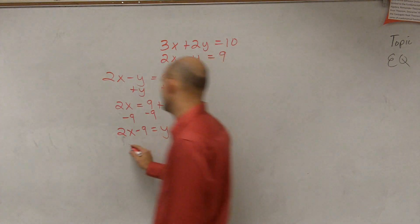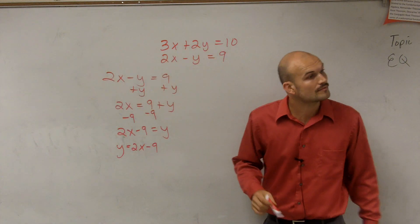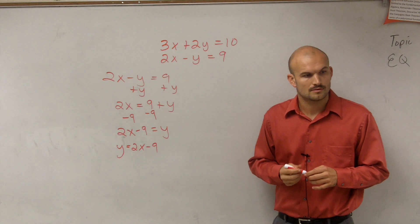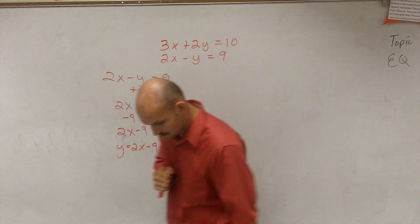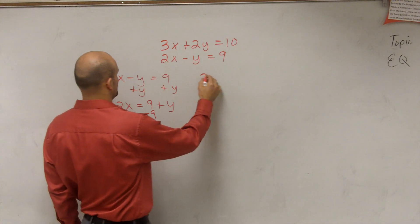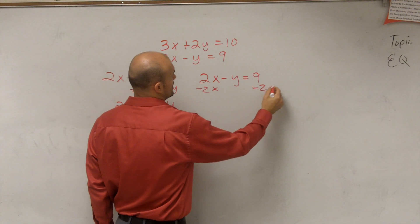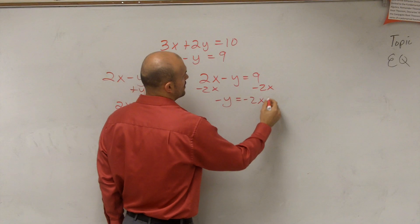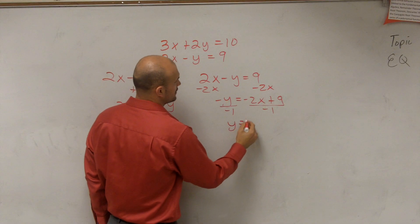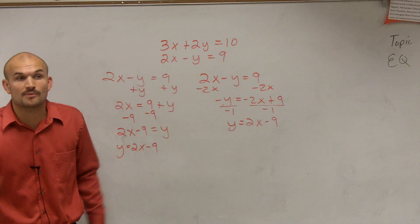So now my equation is y equals 2x minus 9. You could also get there by subtracting 2x from both sides: negative y equals negative 2x plus 9, then divide by negative 1. Either way gives you y equals 2x minus 9 — the same answer. It doesn't matter which way you do it, as long as you solve for the variable.